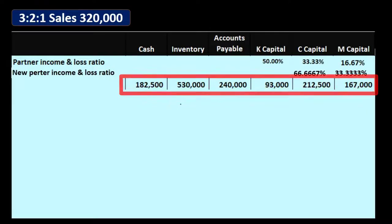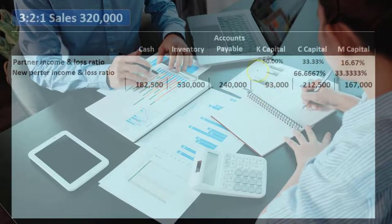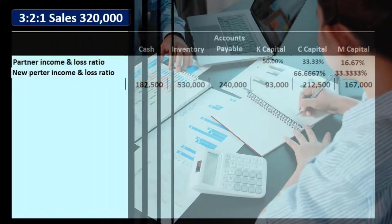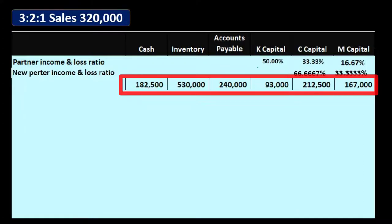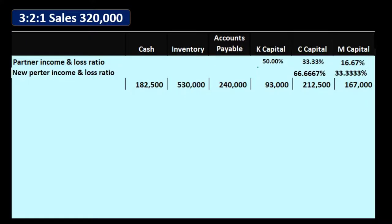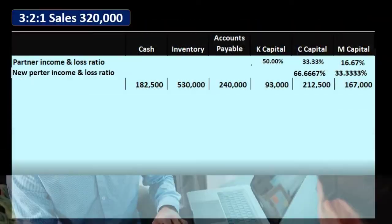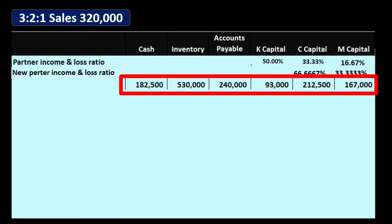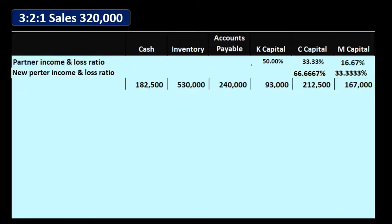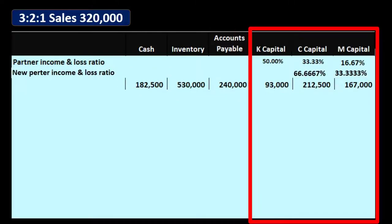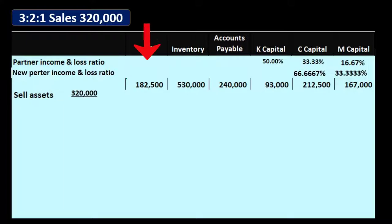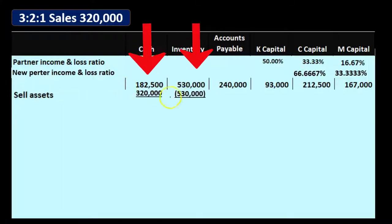The closing process involves: first selling the inventory, then allocating any gain or loss to the capital accounts per the profit-sharing agreement. Then we check for negative capital accounts and deal with them — and there will be one in this problem. After that, we pay off liabilities, then pay off the capital account balances. This order is preferred to avoid or minimize negative capital accounts.